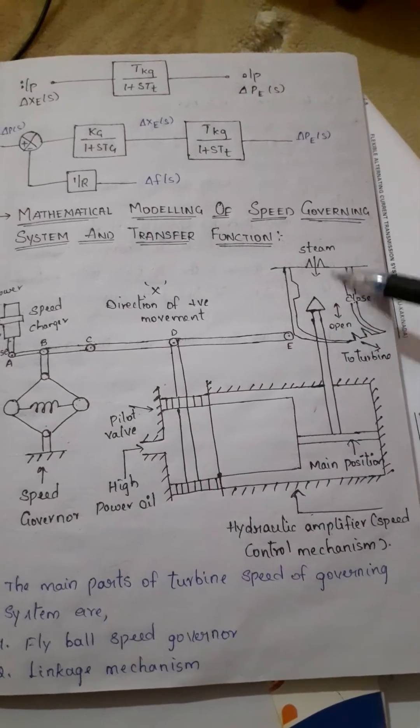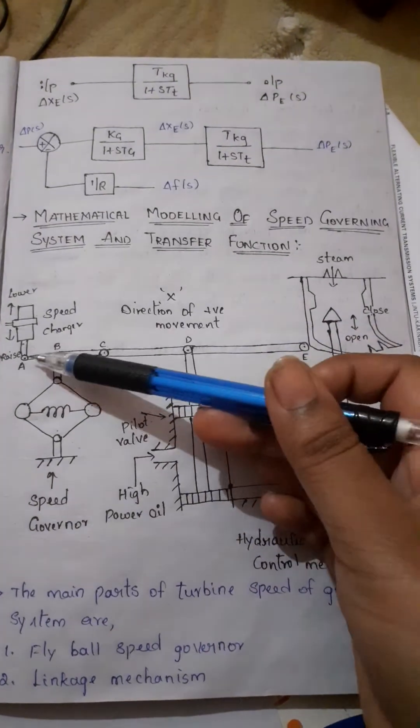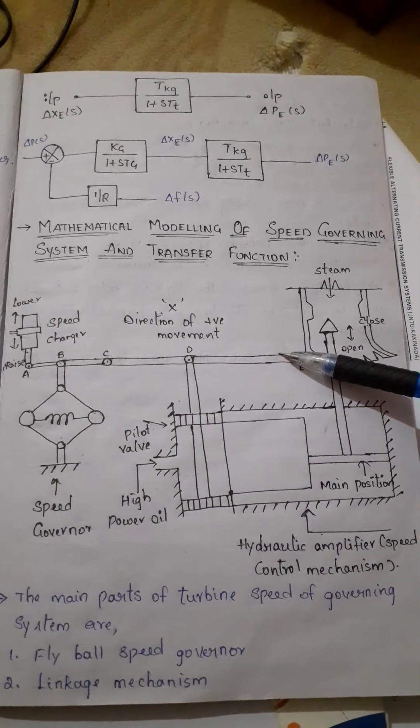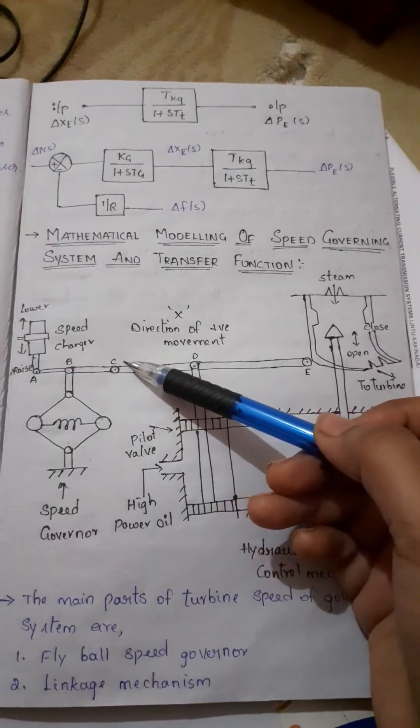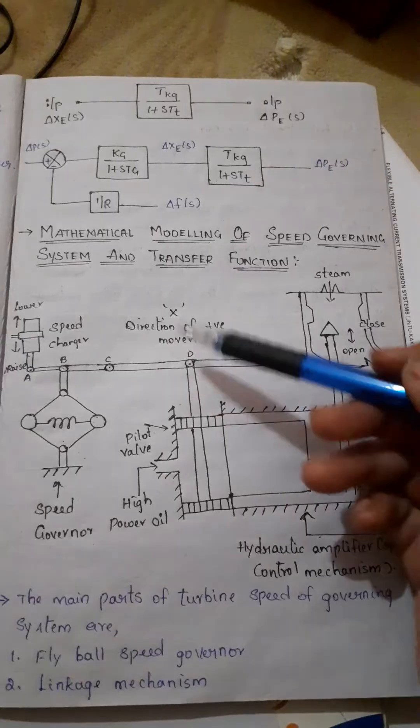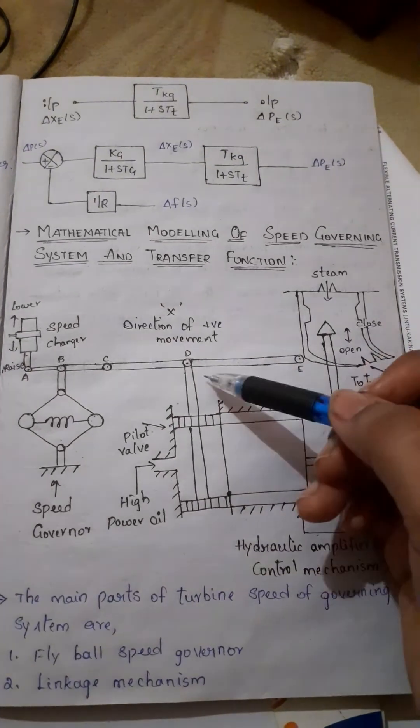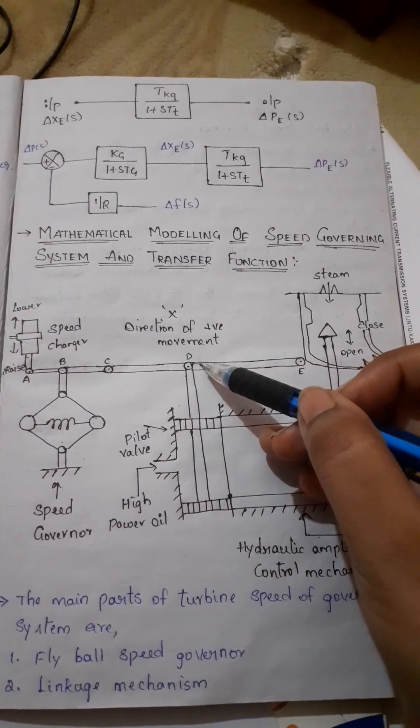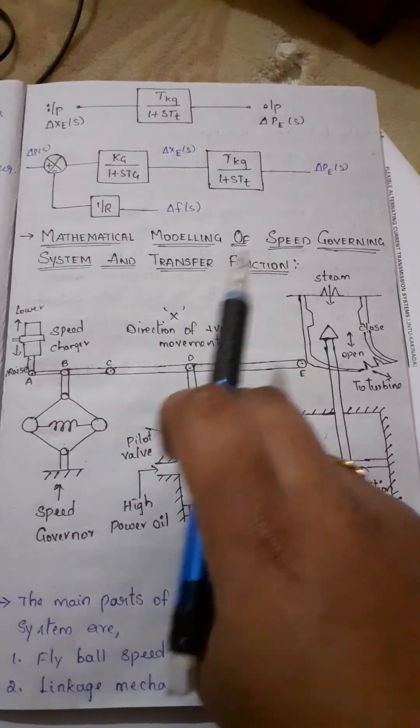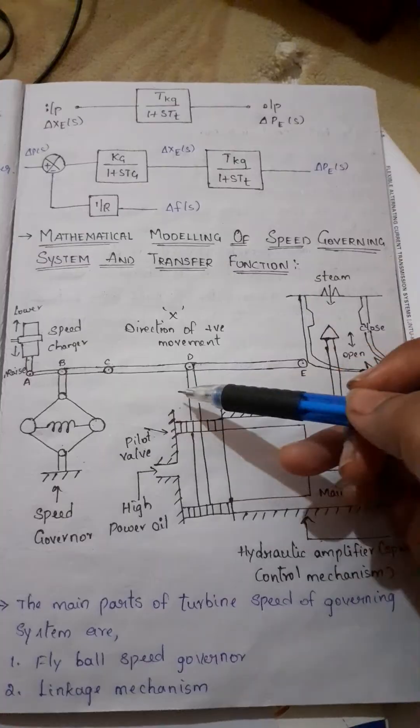The third one is the linkage mechanism. The linkage mechanism has two rigid links. One rigid link is ABC which is pivoted at point B, and another link is CDE which is pivoted at D. This linkage mechanism provides a movement to control the valve in proportion to change in speed. It also provides feedback from the steam valve movement.